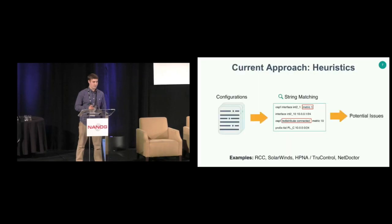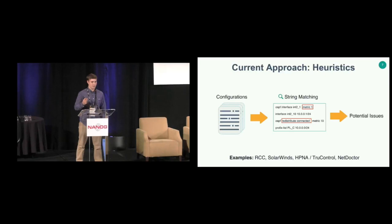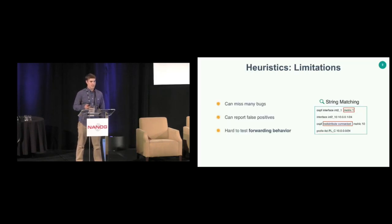To understand why Minesweeper would be useful, let's think about how you can find bugs in your network currently. One approach is heuristics — tools that take your network configurations, do string matching to look for the presence or absence of certain configuration features, and flag potential issues. You can detect things like violations of best practices or poorly designed passwords. The problem is that it can miss many bugs, report false positives, and it's very hard to test any kind of forwarding behavior using this approach.